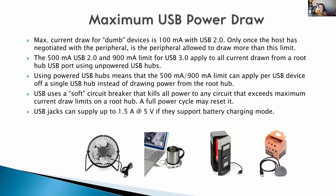The fortunate thing about the USB standard is that if you exceed the maximum power draw on a specific USB port, a lot of devices have a soft circuit breaker which kills power to all devices connected to the root hub — they all just go dead. The only way to fix it is to power cycle the hub or the entire machine. Similarly, if an active hub is designed correctly and you overload one of its ports, it will shut all power off to its devices and you just power cycle the active hub instead.